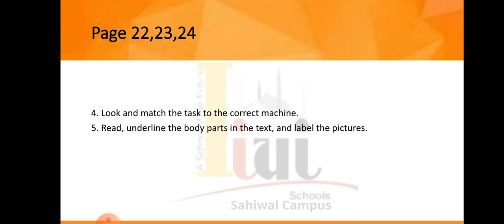The third simple machine is a wedge. A wedge is a tool that can push things apart. A knife is an example of a wedge — we can cut vegetables and fruits with the help of a knife, so a knife is a wedge and is a simple machine. You can use your teeth as a wedge. We can chew food with the help of our teeth, so the correct answer is 'teeth.' Underline the body part 'teeth' and also write it below the picture.